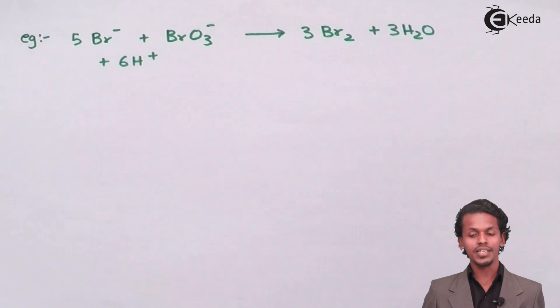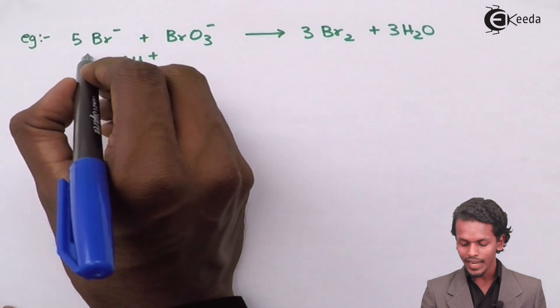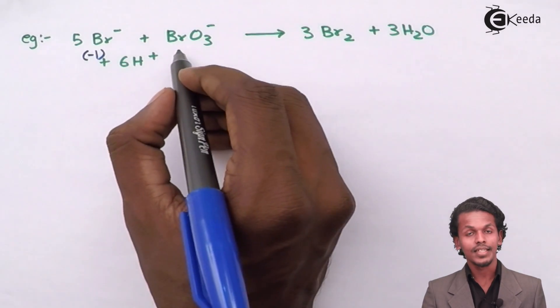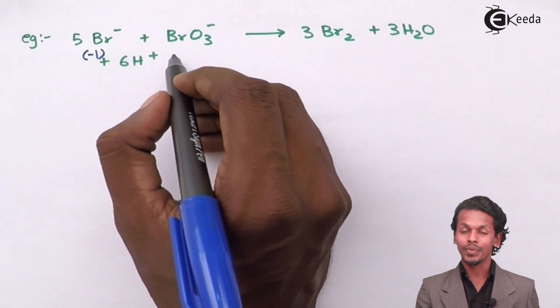In this case, the main consideration is the bromine. This bromine has an oxidation number of minus 1, while for this bromine in BrO₃⁻, the oxidation number has to be calculated.